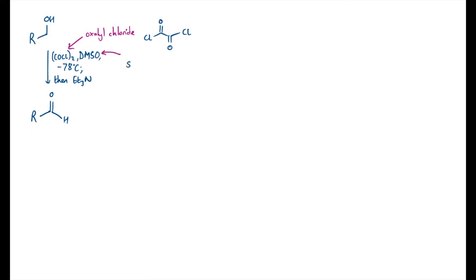DMSO has this structure, but because there's a third row element bonded to a second row element — the sulphur to the oxygen — it might be more useful for us to think about its resonance structure, because the pi bonding is nowhere near as efficient as the sigma bonding. So I'm going to use this charge-separated species in my mechanism for emphasis.